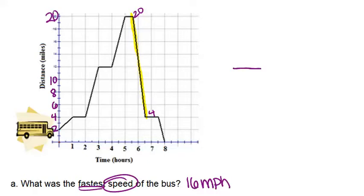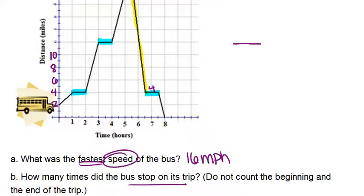So I can see that happens right here. From one hour to two hours, it's stuck at being four miles away. Again, right here it stops, right here it stops, and right here it stops. So it stops four times throughout the trip for about an hour or half an hour each time. So the answer is four times.